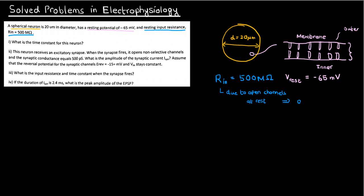You can translate this input resistance to an input conductance by taking the reciprocal, because conductance is just 1 over the resistance. In this case, the conductance would be 2 nanosiemens. Siemens is just the standard unit of conductance. Hopefully you've understood everything so far, but if you haven't, be sure to ask in the comments.